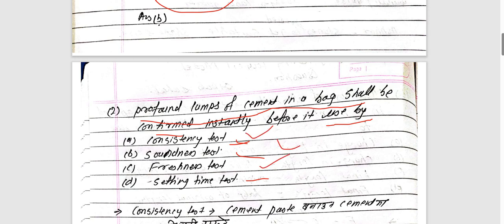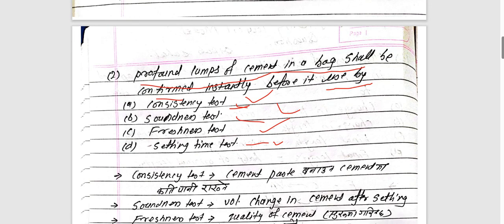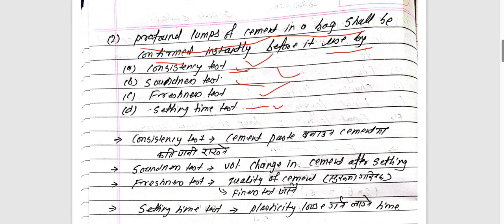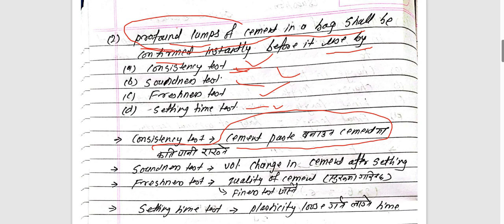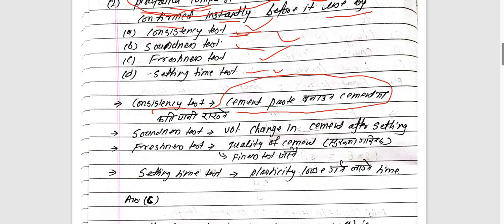The cement tests include: consistency test, freshness test, setting time test, and soundness test. The consistency test involves the amount of water in the cement paste to determine the quality of cement. In the soundness test, quality of cement is also assessed.